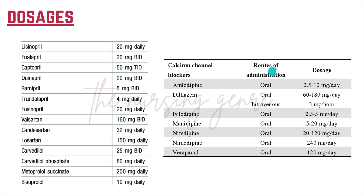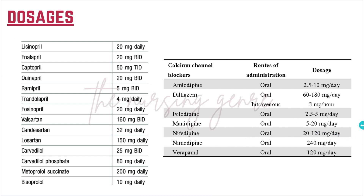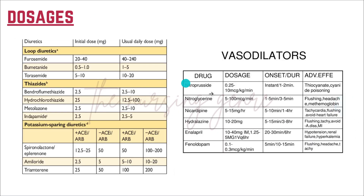For calcium channel blockers: amlodipine 2.5 to 10 mg per day, diltiazem 60 to 180 mg per day, and nifedipine 20 to 120 mg per day. Again, these doses can be adjusted based on the patient.